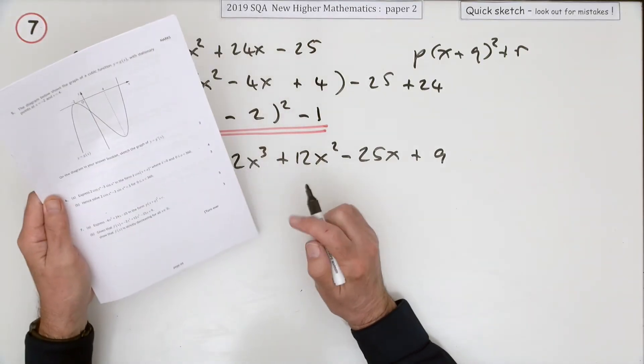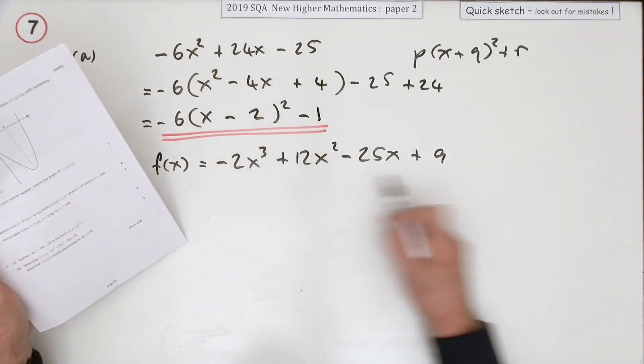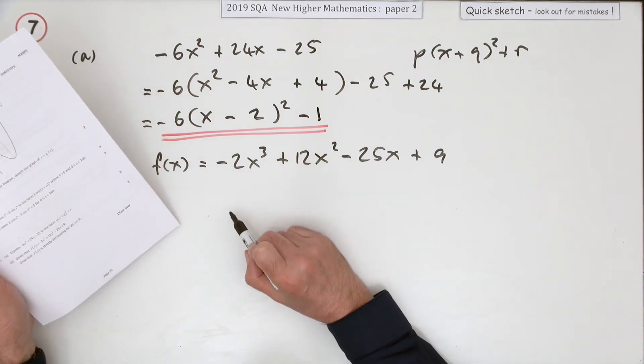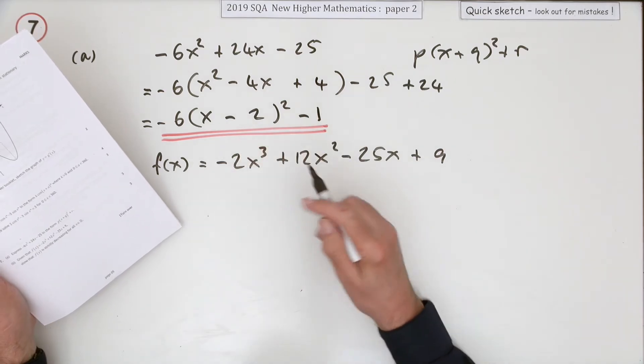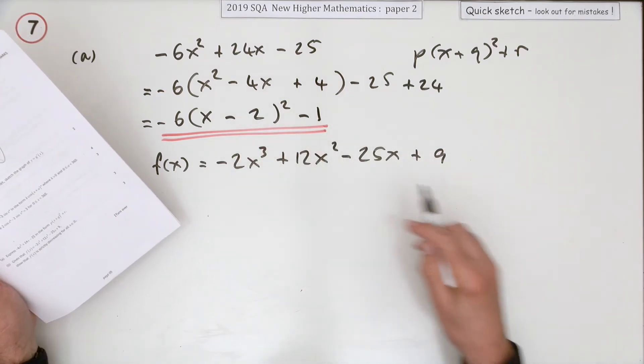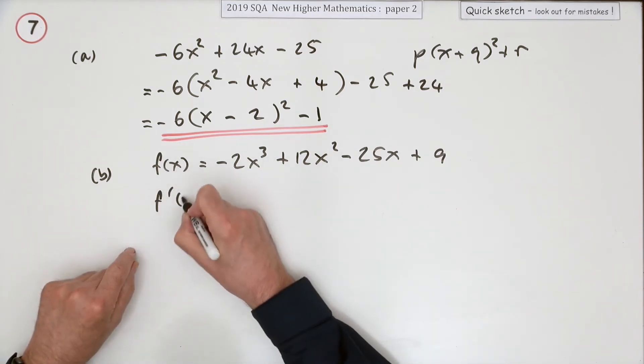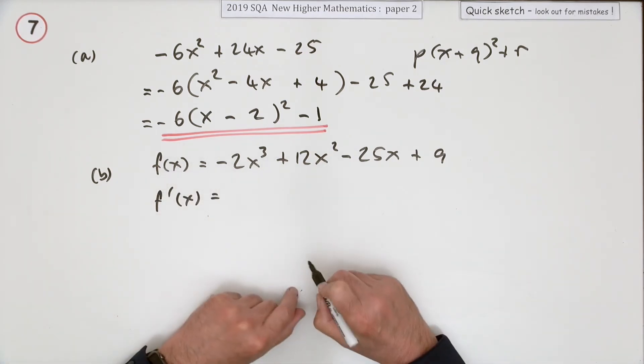Part b, given that you've got this cubic function, show that f(x) is strictly decreasing. That means it's always heading down, it doesn't even pause like a point of inflection on the way down. What that's to do with is the derivative, that'll give the rate of change.